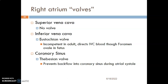The superior vena cava has no valve. The inferior vena cava has a valve called the Eustachian valve, which is incompetent in adults but directs inferior vena cava blood through the foramen ovale in the fetus. The coronary sinus has what we call the Thebesian valve. These valves prevent backflow into the coronary sinus during atrial systole — during pumping of the atria, you want to prevent backflow of deoxygenated blood into the coronary sinus.